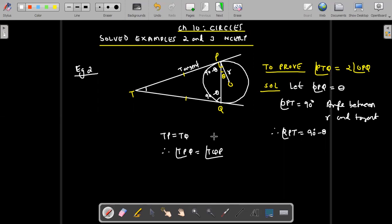You will have to write the reasons here. This is because tangents from the same external point to a circle are equal. This is because angles opposite equal sides are equal. So angle TPQ is equal to angle TQP and both of them will be 90 minus theta.